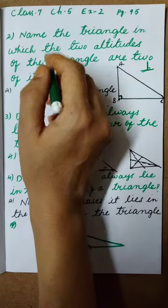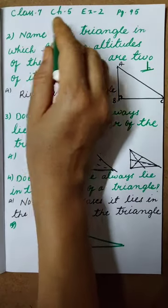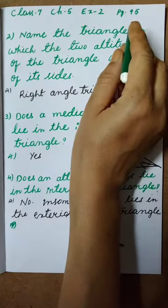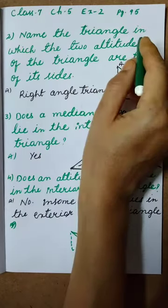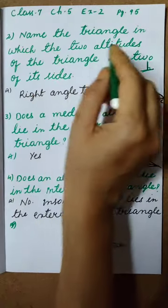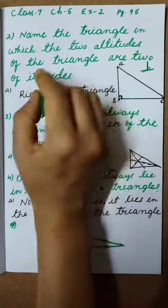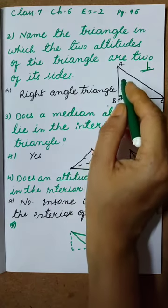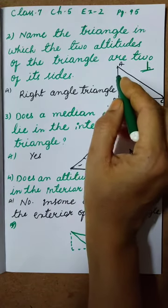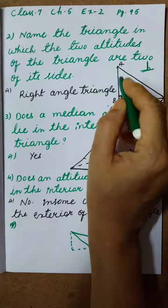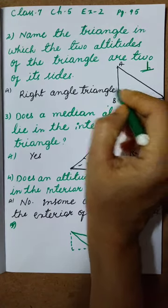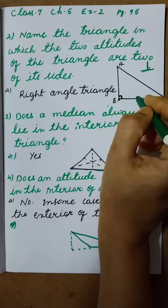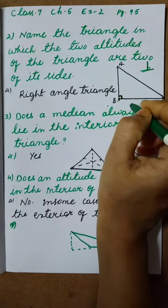Hi children, today I am going to explain class 7 chapter 5 exercise 2 page number 95 question number 2: Name the triangle in which the two altitudes of the triangle are two of its sides.